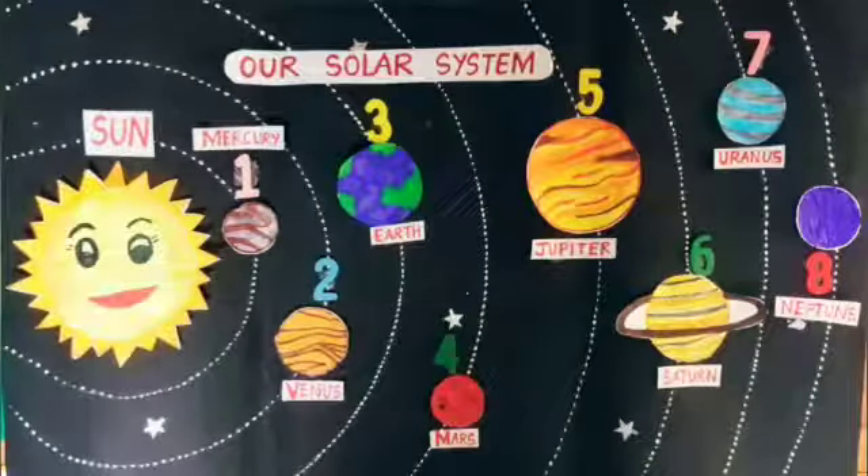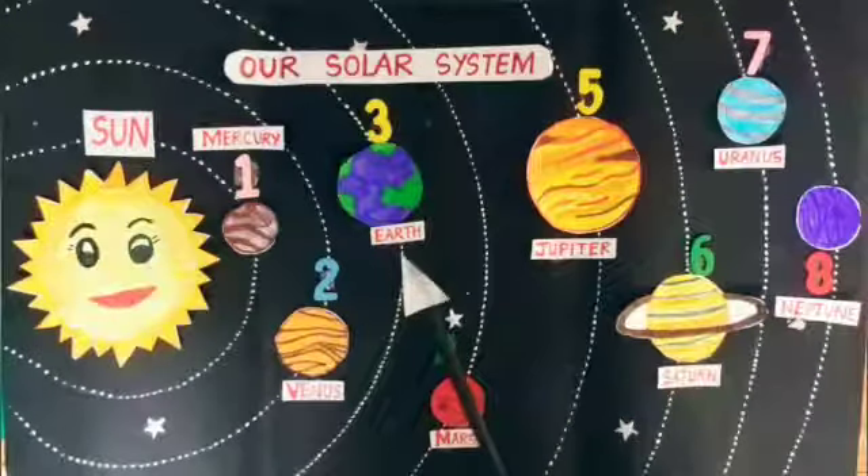Mr. Sun is the head of Solar Family and all the members of the Sun are called Planets. Mercury, Venus, Earth, Mars, Jupiter, Saturn, Uranus and Neptune.